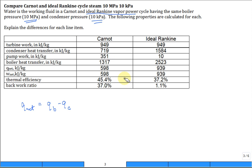Also notice what is work_net? It's the work the turbine produces minus the work the pump consumes. So this work_net of 598 equals 949 minus 351. That's what those numbers come from.